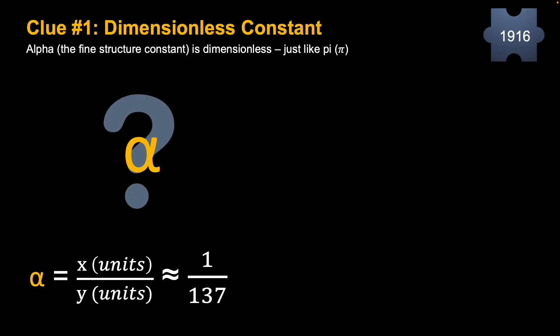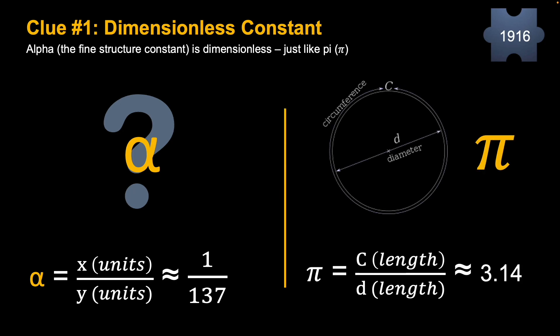But let's take a look at the first clue, which is that it is dimensionless. It's a ratio, and the ratio could be a lot of different things. Some units divided by other units, which cancels them out and makes it dimensionless. But we don't know what those units are. But I will give you an example of another very famous ratio that's dimensionless: pi.